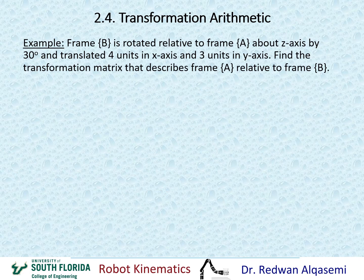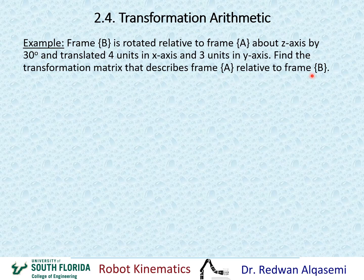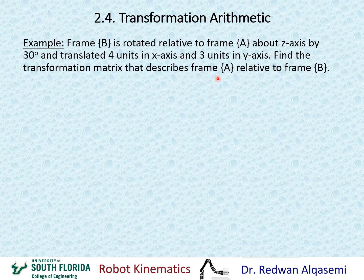Let's take an example on inversion of a transformation matrix. Frame B is rotated relative to frame A about the Z axis by 30 degrees and translated 4 units in X and 3 units in Y. Find the transformation matrix that describes frame A relative to frame B. Note: this asks for A relative to B — the opposite of the usual — so we must invert the transformation matrix that defines B relative to A.